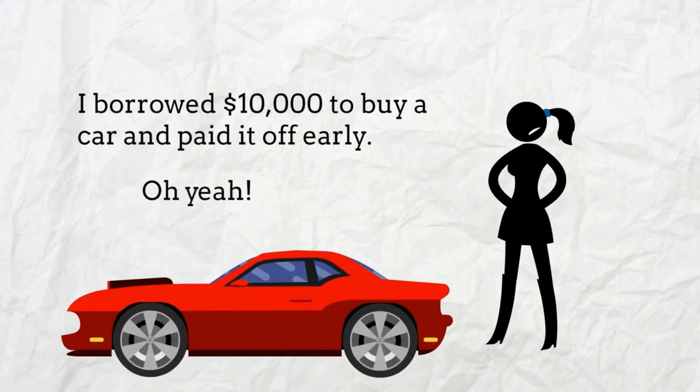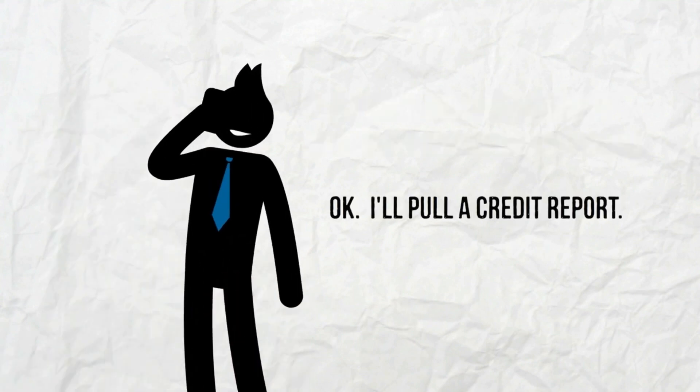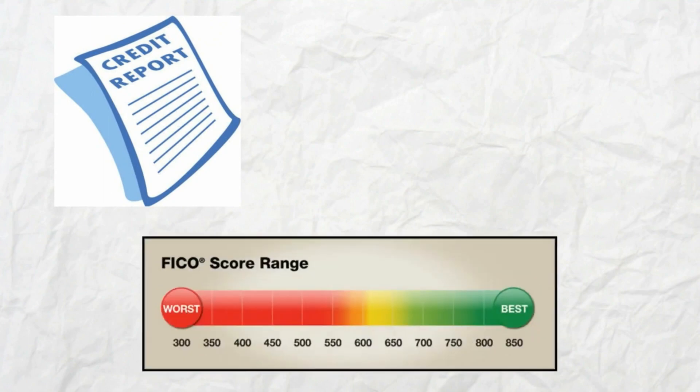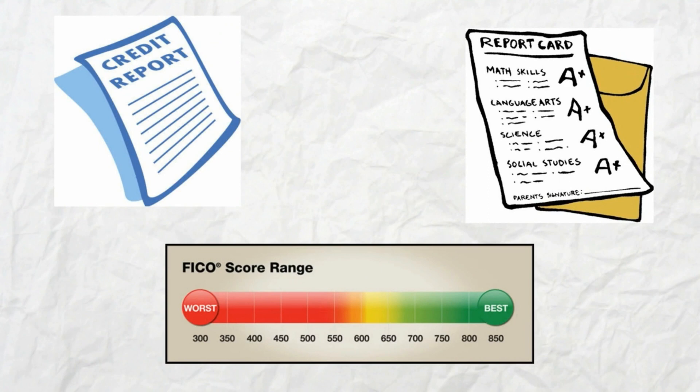Lenders want to know the same information, much of which can be found in a person's credit report. A credit report is a document that lists a person's track record of paying back debts, kind of like a report card for how well you pay back your bills.